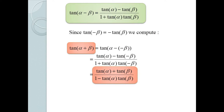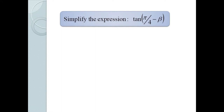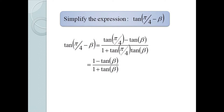Using our even-odd identities we know tan(−β) = −tan β. So tan(α + β) = tan(α − (−β)), giving us the same formula with addition and subtraction both reversed. We usually write this in the combined form. For example, tan(π/4 − β) gives (tan(π/4) − tan β) / (1 + tan(π/4) · tan β). Since tan(π/4) = 1, this simplifies to (1 − tan β) / (1 + tan β).